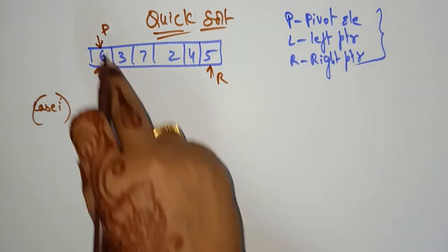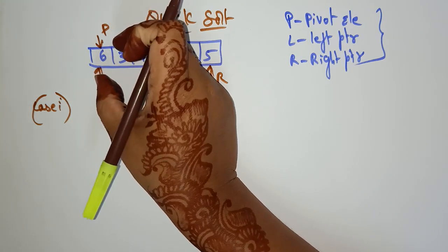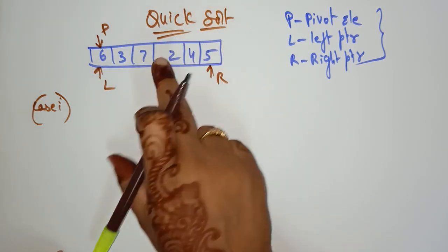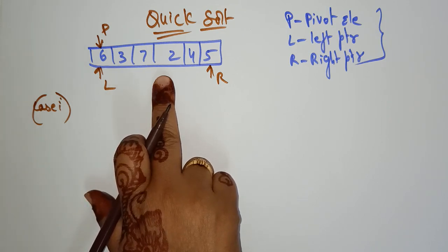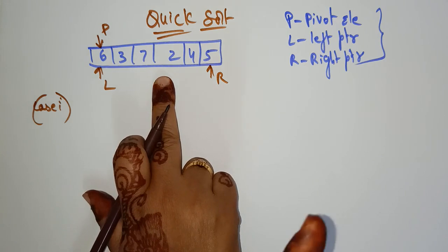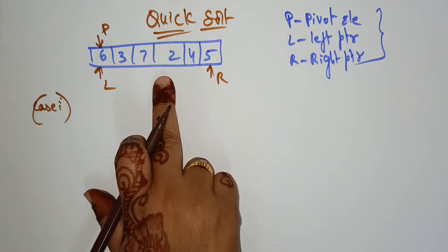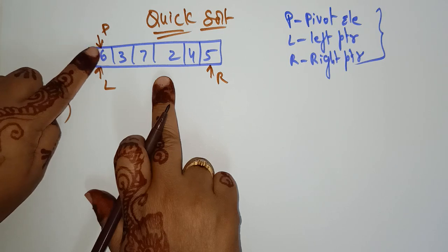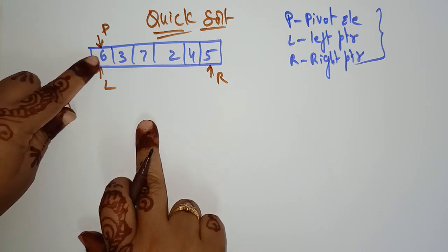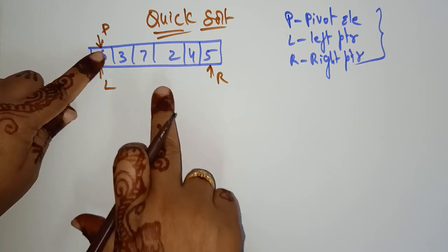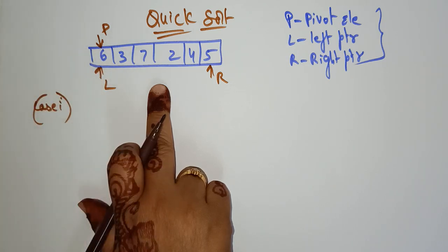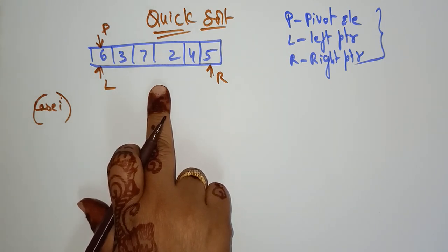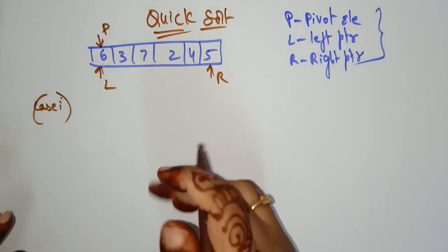Case 1. Whatever pivot element I am taking, I have to fix it in its exact position in the array, such that the left side has all elements less than the pivot and the right side has all elements greater than the pivot. Here 6 is my pivot element. So 6 should be fixed first, then I apply the divide and conquer method.